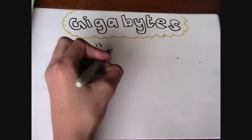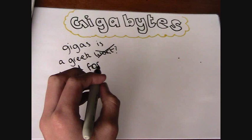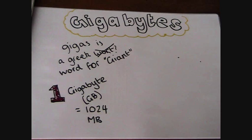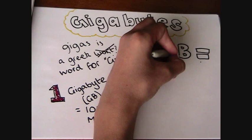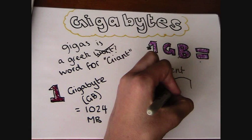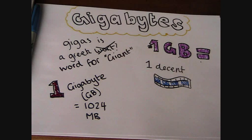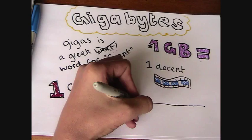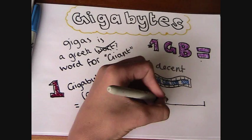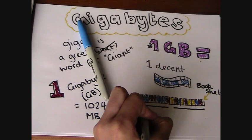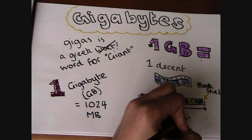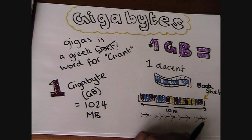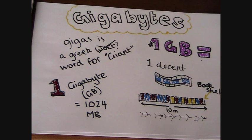The next biggest is a gigabyte. One gigabyte of data is equal to 1024 megabytes of data. One gigabyte of data could hold one decent quality full movie. It's also equal to about 10 meters of paper on a bookshelf — the equivalent of a bookshelf for five people long.